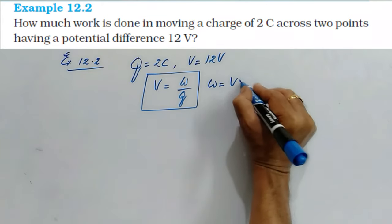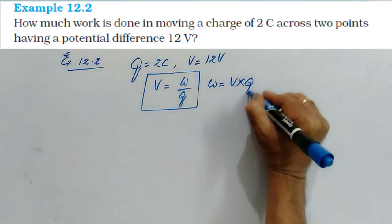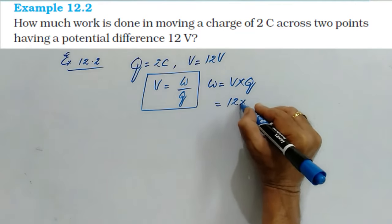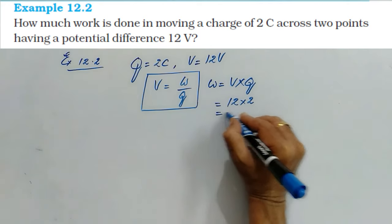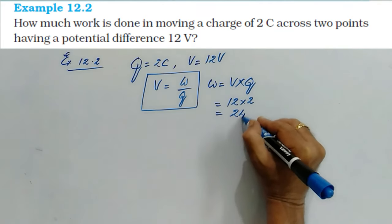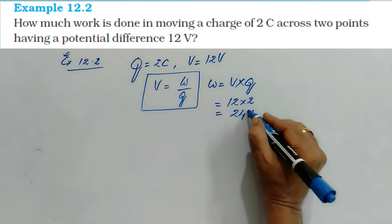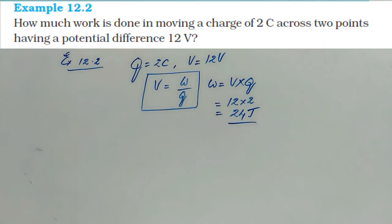Work done is equal to V times Q, that is 12 times 2. What is the unit of work done? In SI system it is joule. 24 joules. So 24 joules is the answer for this question.